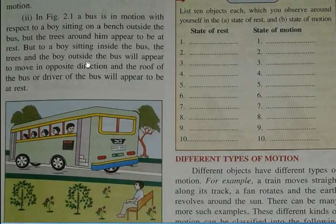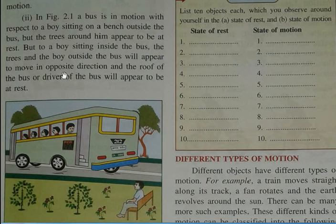In Figure 2.1, a bus is in motion with respect to boys sitting on a bench. But to a boy sitting inside the bus, the trees and the boy outside the bus will appear to move in the opposite direction, while the roof of the bus or the driver of the bus will appear to be at rest.